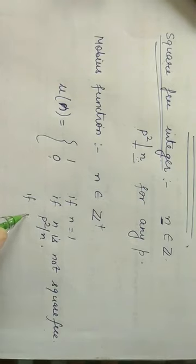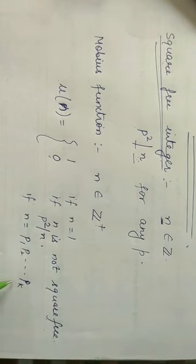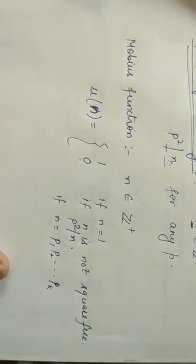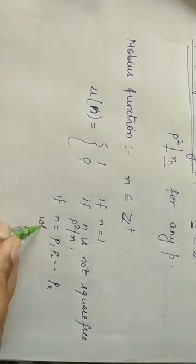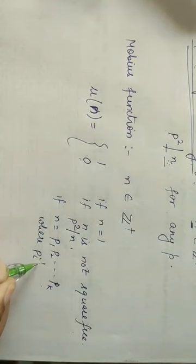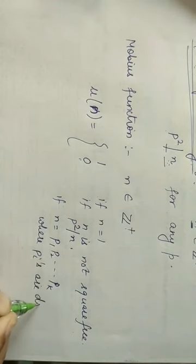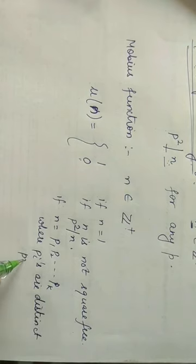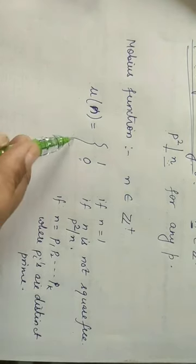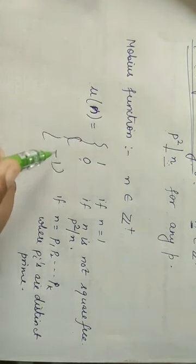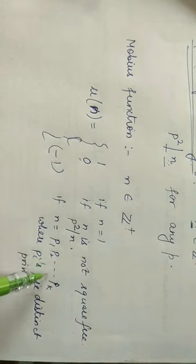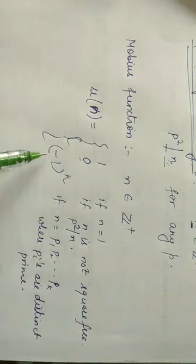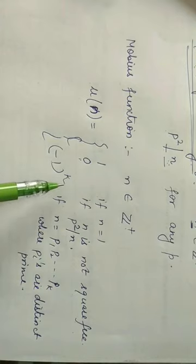The third case is if n is a product of distinct primes — that is, n = p₁·p₂·…·pₖ where all the pᵢ are distinct primes. In that case the value of μ(n) equals (−1) raised to the power of the number of distinct primes, that is (−1)^k.